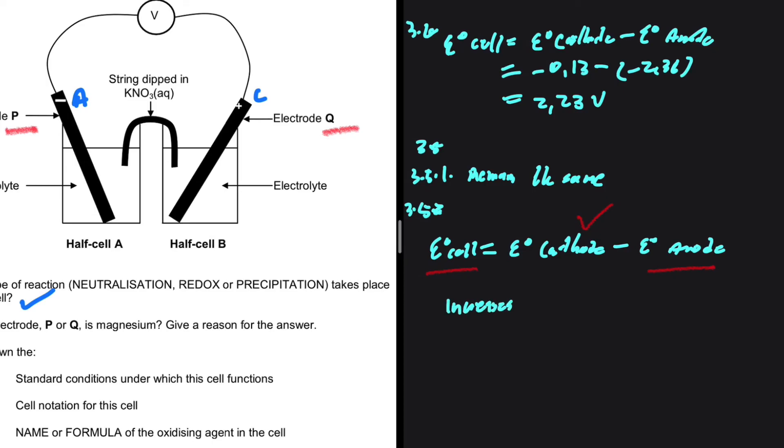When we increase the concentration, the reduction potential increases. And when we decrease the concentration, the reduction potential decreases.